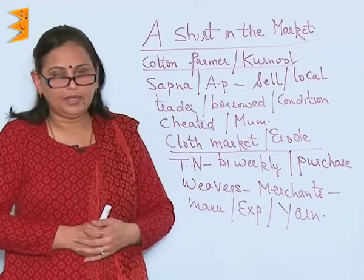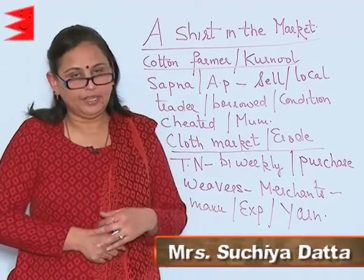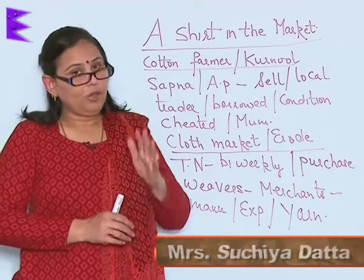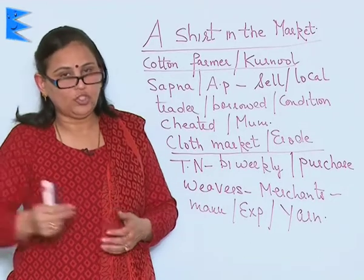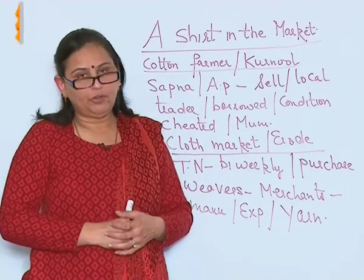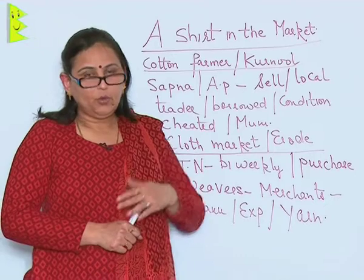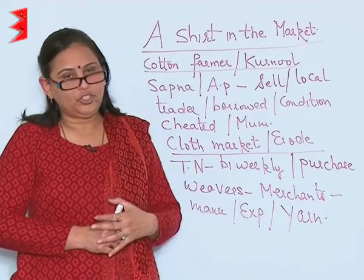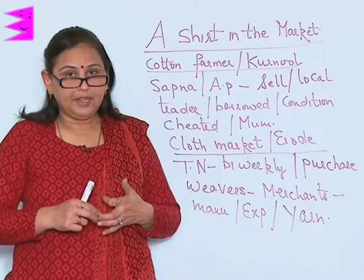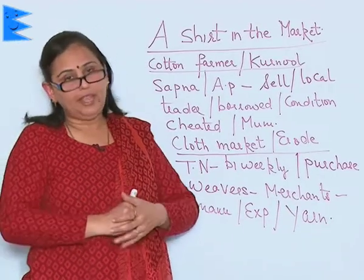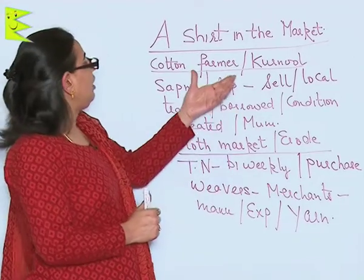We are about to pick up the ninth chapter of civics class 7 and the name of the chapter is 'A Shirt in the Market.' All of you have gone to the market to buy a shirt. It seems very simple — you pay money to the shopkeeper, pick up the shirt of your choice, and wear it. But where does this shirt come from? Who are the people involved in making the shirt, and what is the raw material used? This is the main concern of the chapter.